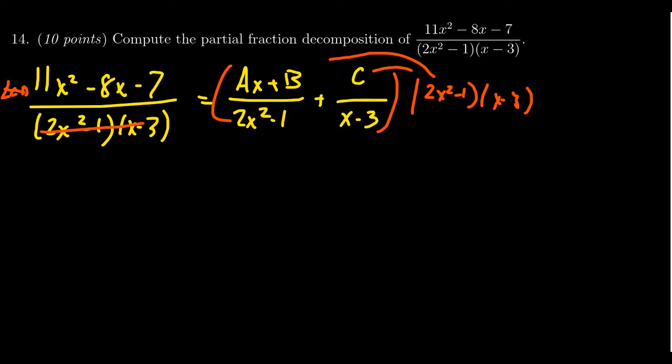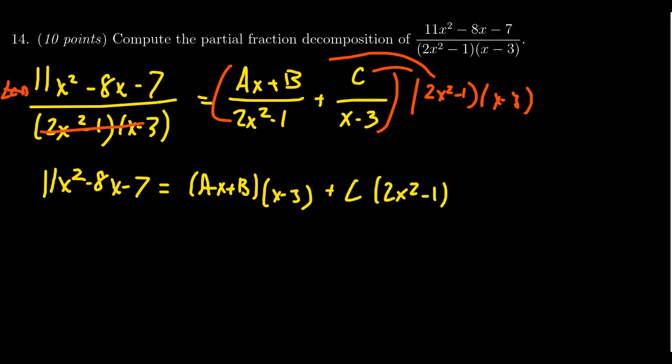We'll be left with 11x squared minus 8x minus 7. This is going to equal ax plus b times x minus 3. The thing that didn't cancel out was the thing you didn't have in the denominator. So the x minus 3 is still around. And then you're going to get c times 2x squared minus 1, like so.